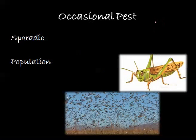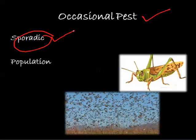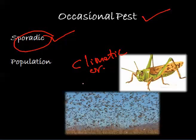The next category is the occasional pest, also called a sporadic pest. This pest appears occasionally, and the main reason for its appearance is certain climatic conditions or depletion of natural control.